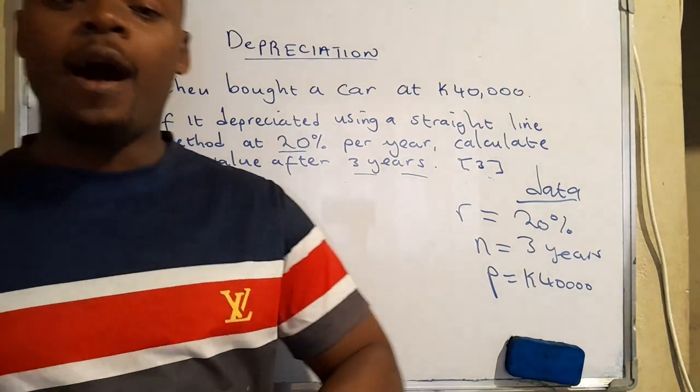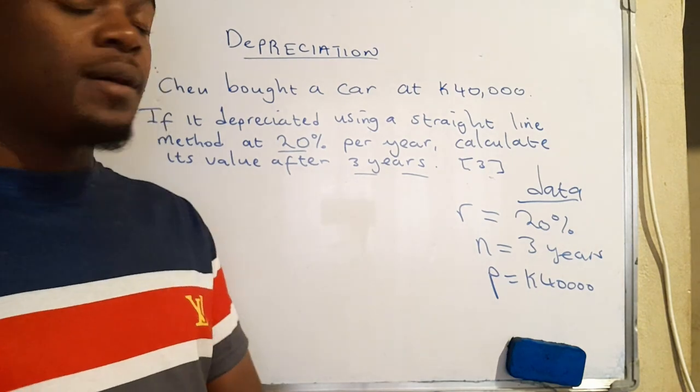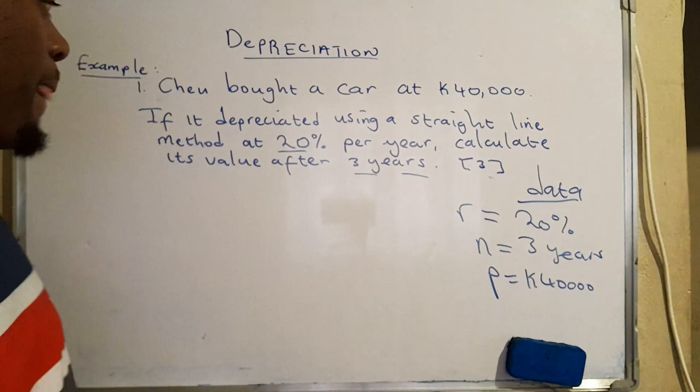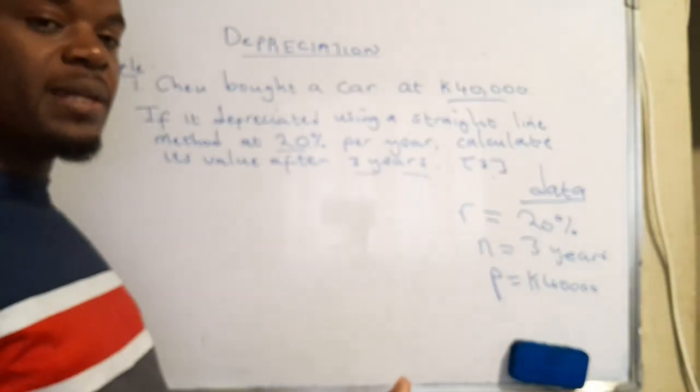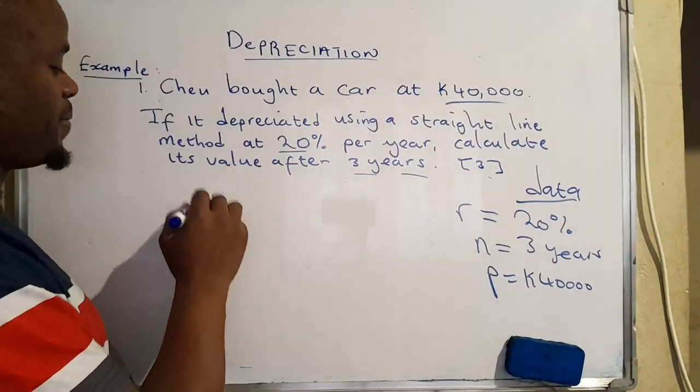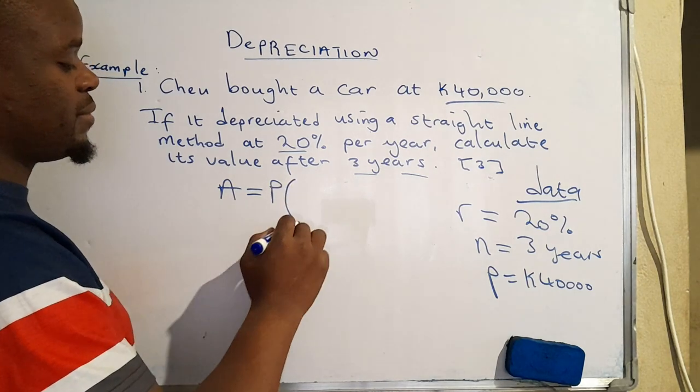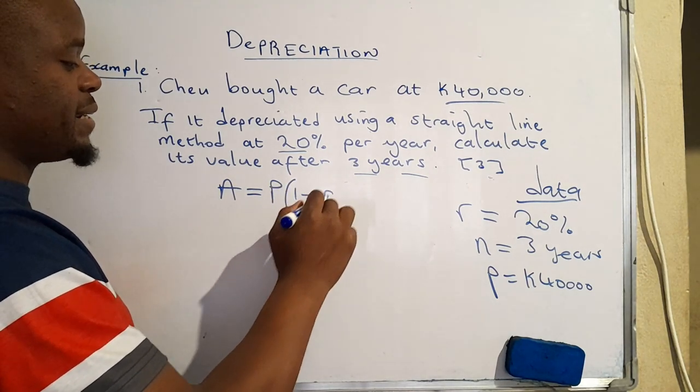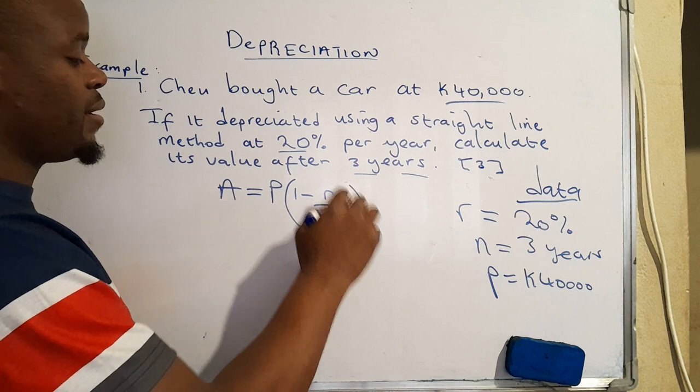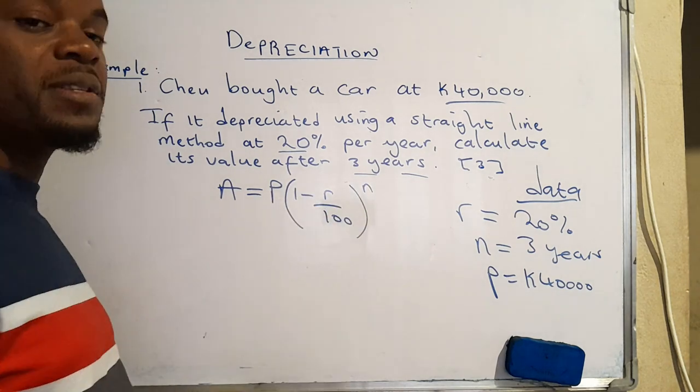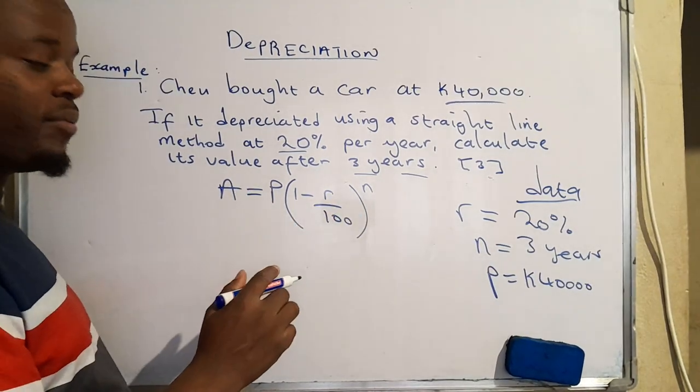The major question now is how do you calculate the value of this car after depreciation. We expect that value to be less than 40,000 because it will lose some value. So there is a formula that we particularly use to calculate this. We say the value of an item is equal to the initial value, which is 40,000, multiplied by one minus the rate at which this asset is actually depreciating over 100, then raised to the power n. N is actually the period within which depreciation will take place.